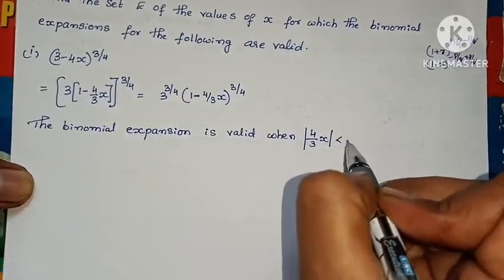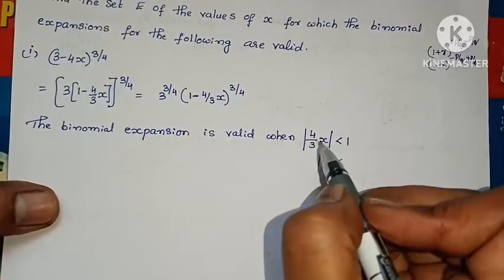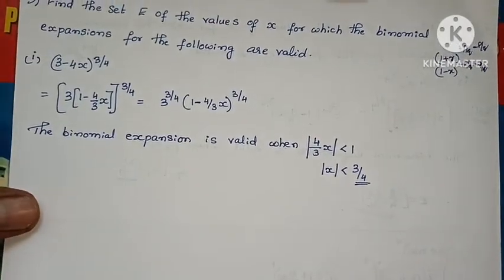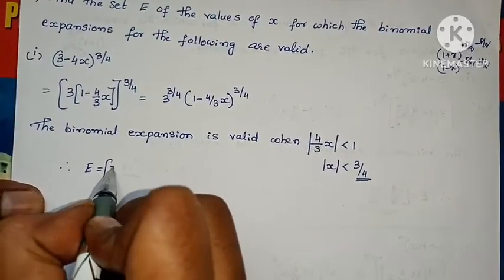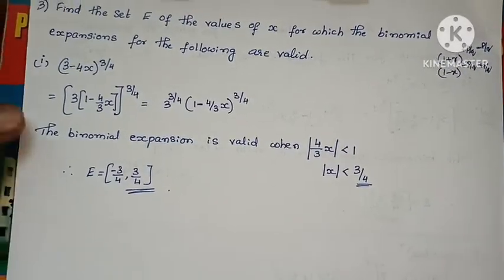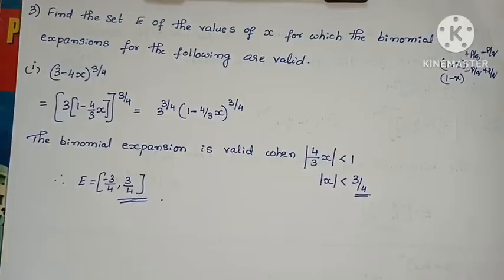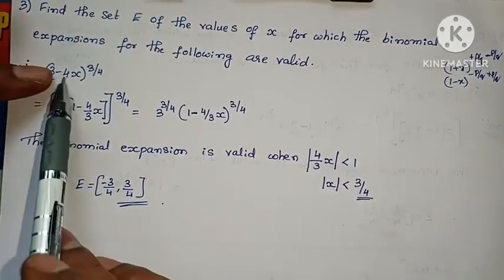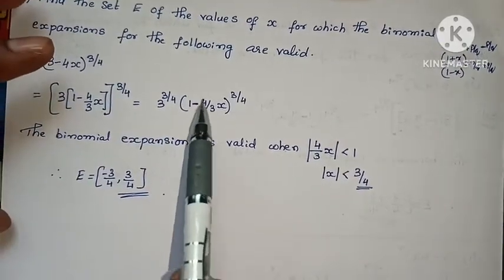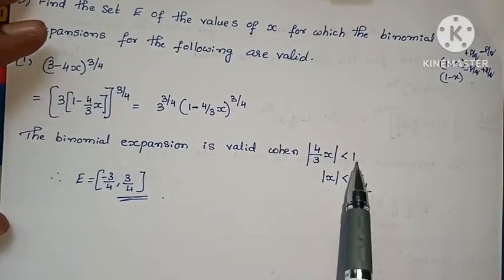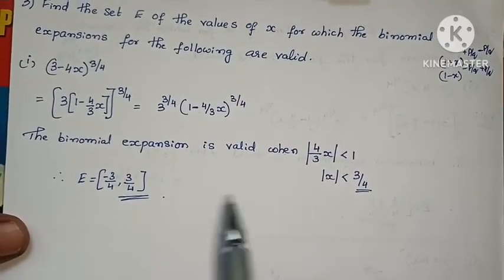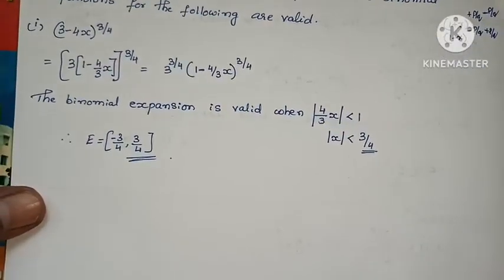The binomial expansion is valid when modulus of x is less than 1. Multiplying out, if we have (4/3)x inside, modulus of x must be less than 3/4. Since it's a modulus, it covers both positive and negative values. Therefore x belongs to (−3/4, +3/4). Problem complete.